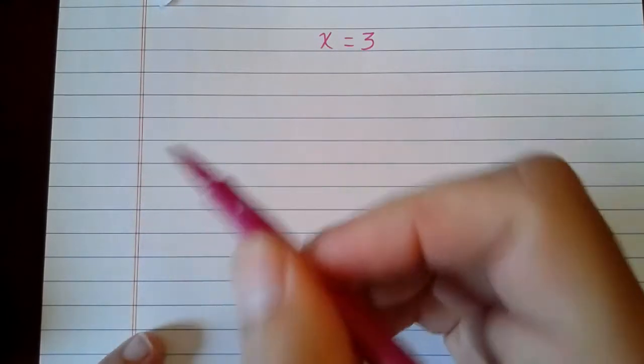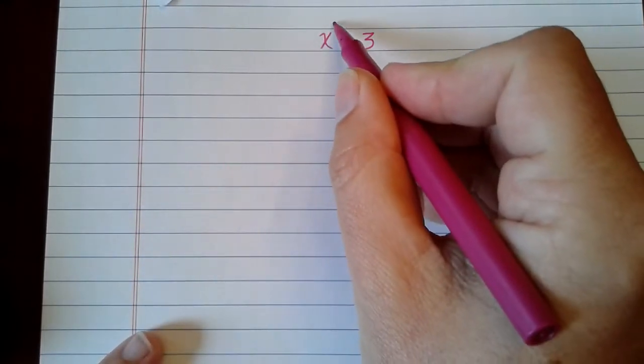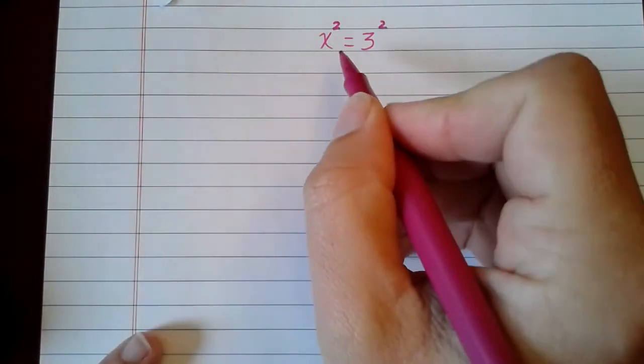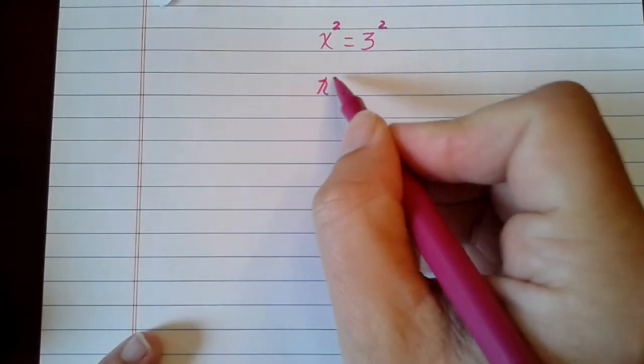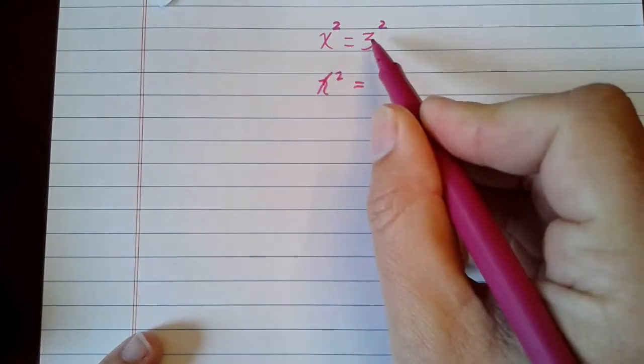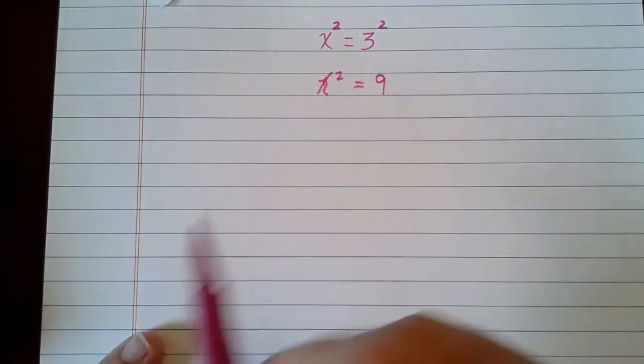So now what I'm going to do is I'm going to square both sides. So now I have x squared equals, let me do 3 times 3, is 9.